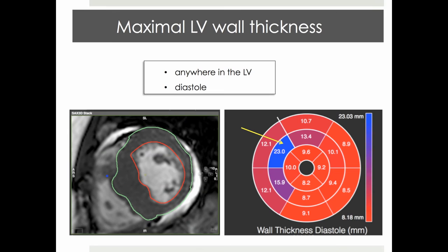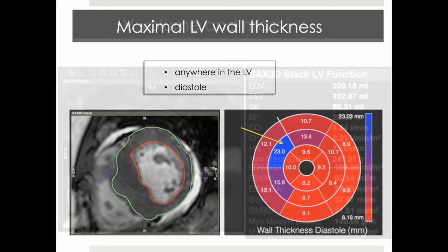Increase in LV wall thickness can be non-homogeneous in distribution, that is, more pronounced in certain parts of the ventricle compared to the others. A useful measure in such cases is maximal LV wall thickness, defined as the greatest measurement anywhere within the left ventricle, most intuitively presented in a bull's eye based on a 16-segment AHA model.